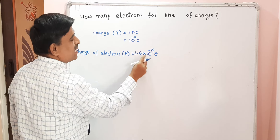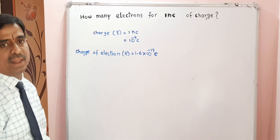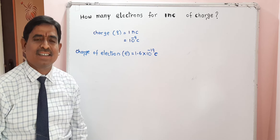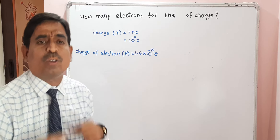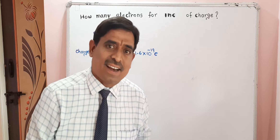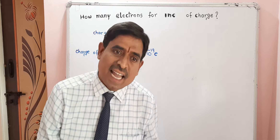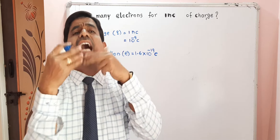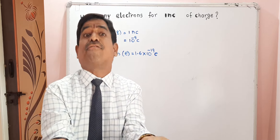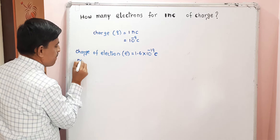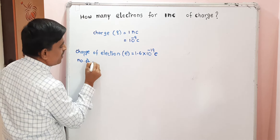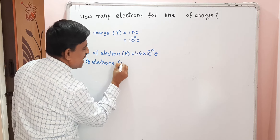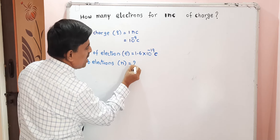They are asking: for this one nano coulomb charge, how many electrons does it contain? One nano coulomb charge contains how many electrons — that is the number of electrons N, which is what we need to find.